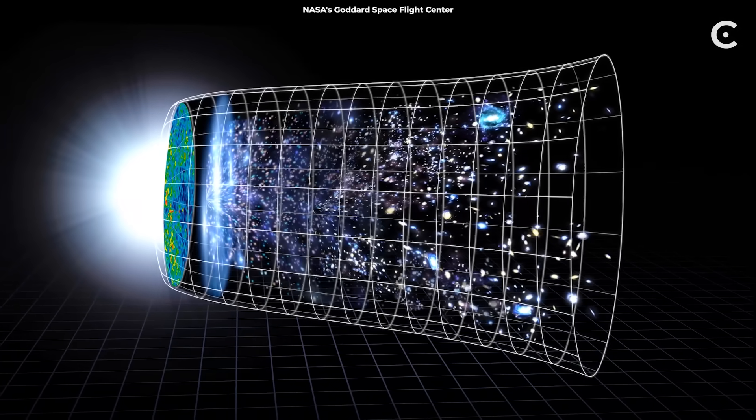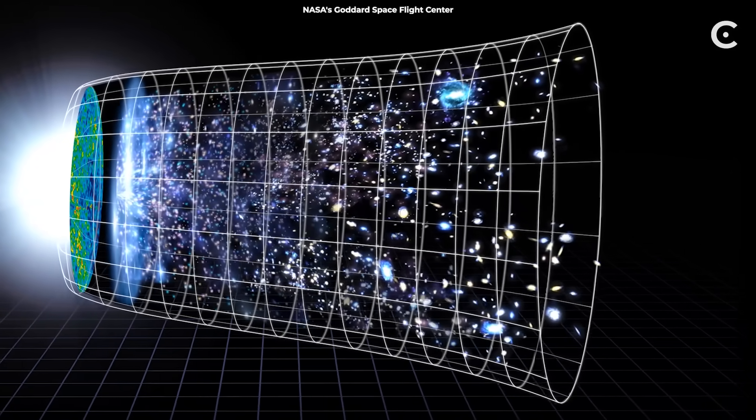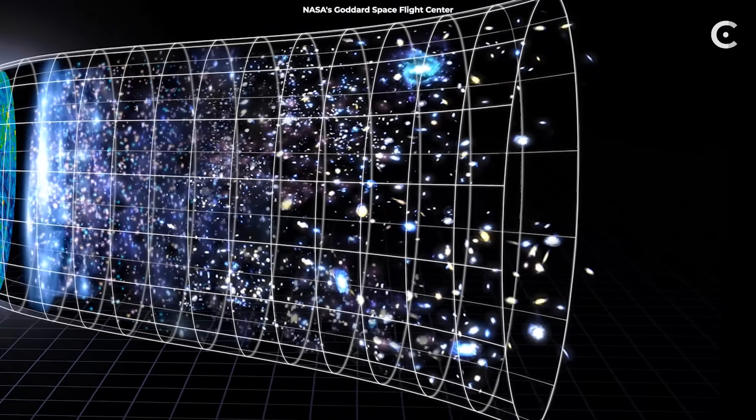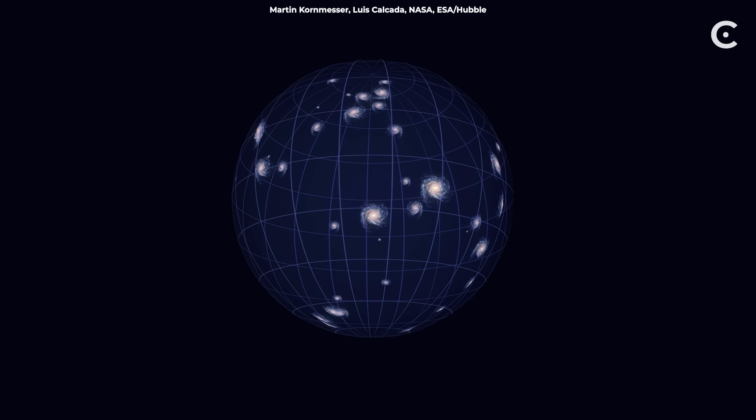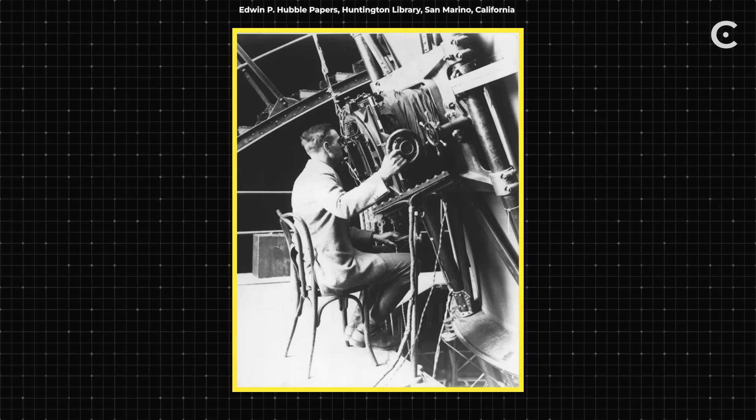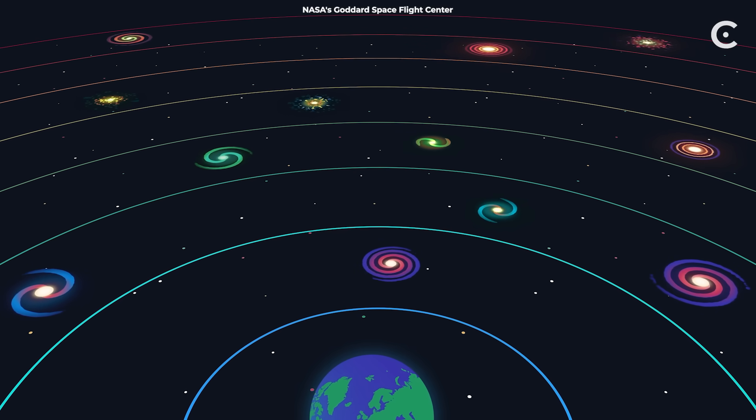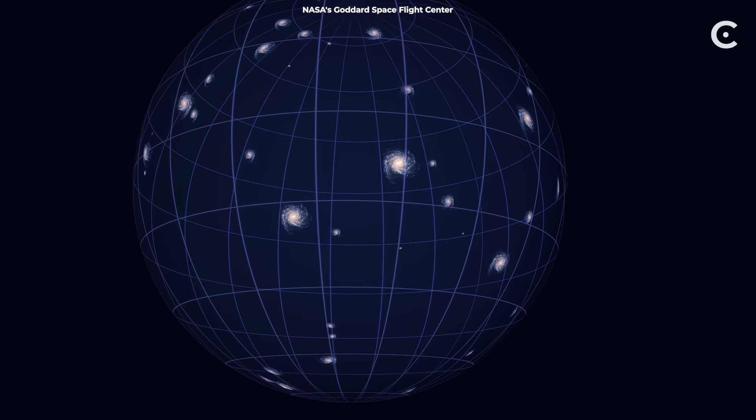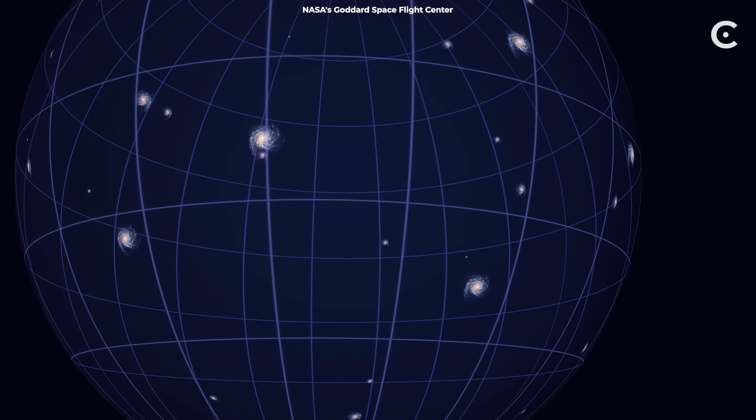Finally, let's talk about the biggest picture of all, the expansion of the universe itself. When we say the universe is expanding, we don't mean galaxies are flying apart through space. We mean space itself is growing. It's like the rubber sheet is being stretched in all directions simultaneously. This expansion was first discovered by Edwin Hubble in the 1920s, who noticed that distant galaxies appeared to be moving away from us. The further away they were, the faster they seemed to be receding. This wasn't because we're at the center of the universe, but because space itself was expanding everywhere.